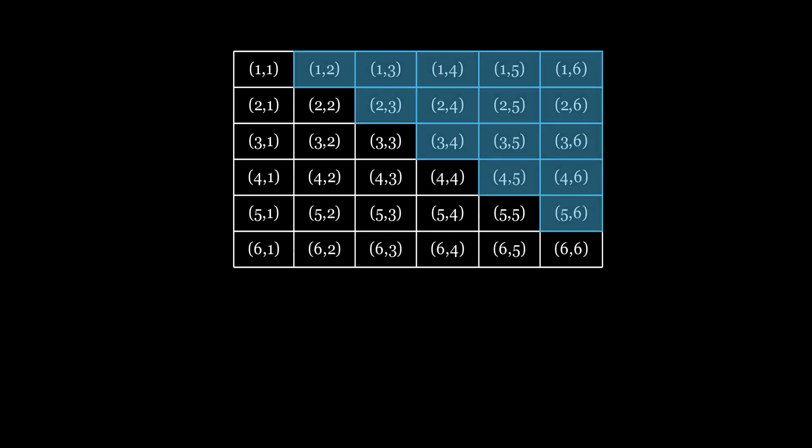Here's the solution. There are 36 possible outcomes in total. In 15 of them, the second die shows a strictly higher number than the first die, so the required probability is 15 over 36.